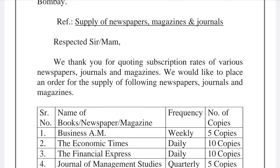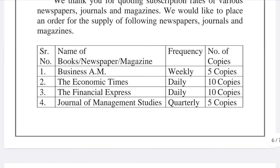In the box: serial number, name of books/newspapers/magazines, frequency, and number of copies. Business Aim — weekly, five copies. The Economic Times — daily, ten copies. Financial Express — daily, ten copies. Journal of Management Studies — quarterly, five copies. You can add more journal articles as per the terms required.